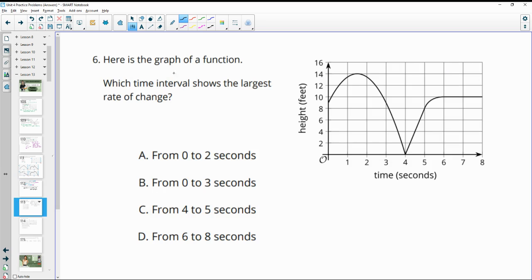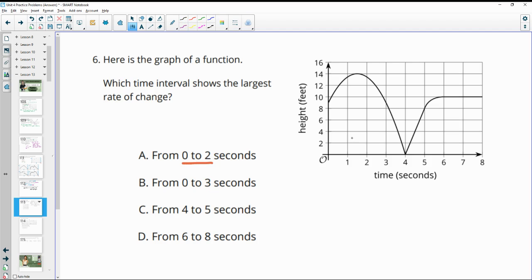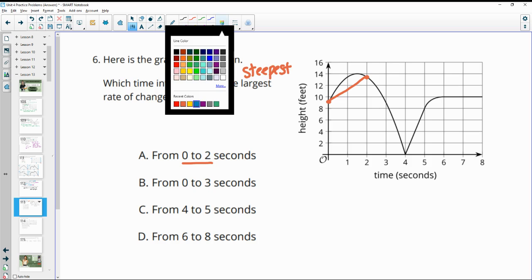Number six, here's the graph of a function. Which time interval shows the largest rate of change? So let's take a look from zero to two seconds. Average rate connects the initial from the zero to where it hits at two. So here would be that slope. And remember, the largest is going to be the steepest slope, either positive going up or negative going down, whichever one is the steepest.